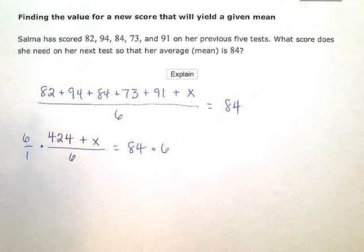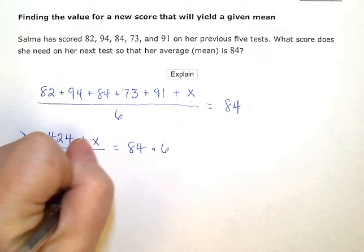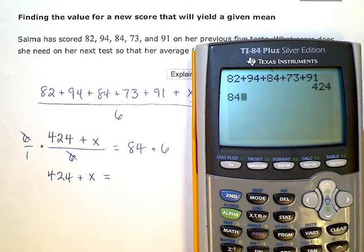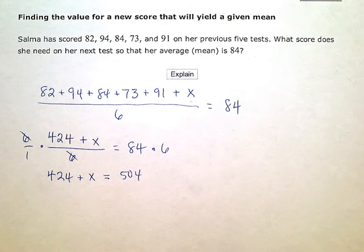Okay, so the sixes will cancel. I'm left with 424 plus X on the left. And on the right, 84 times 6 gives me 504.